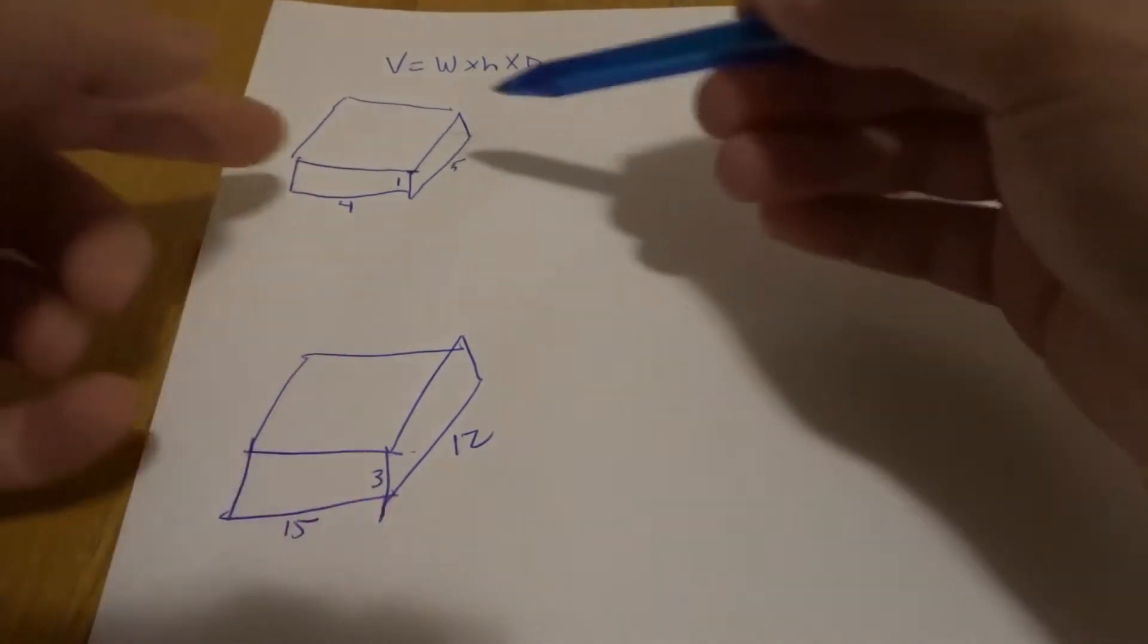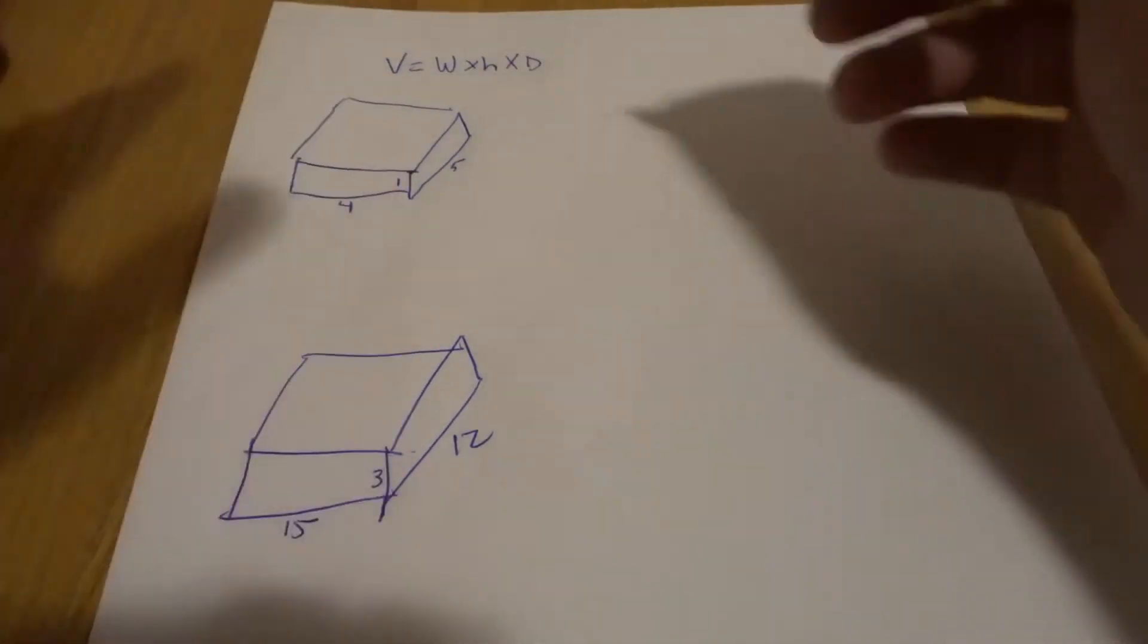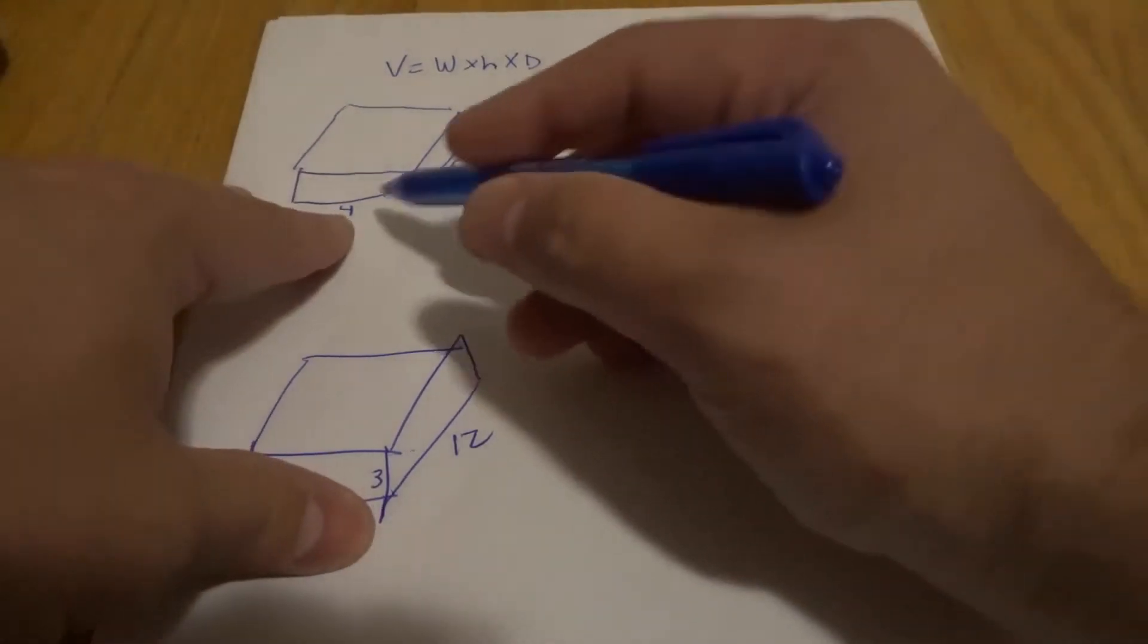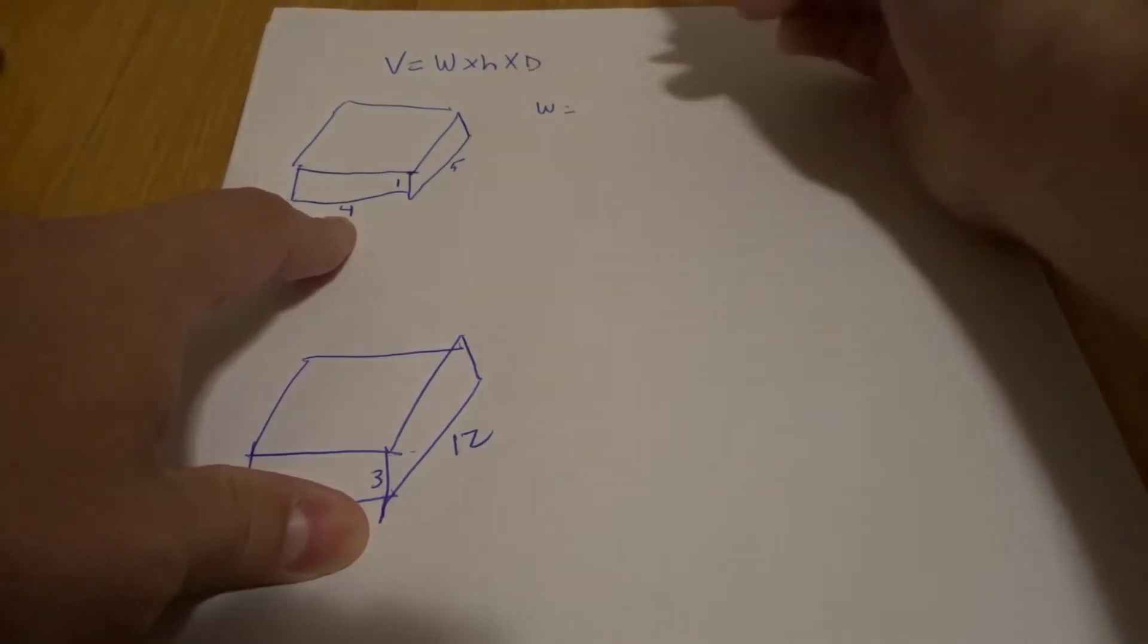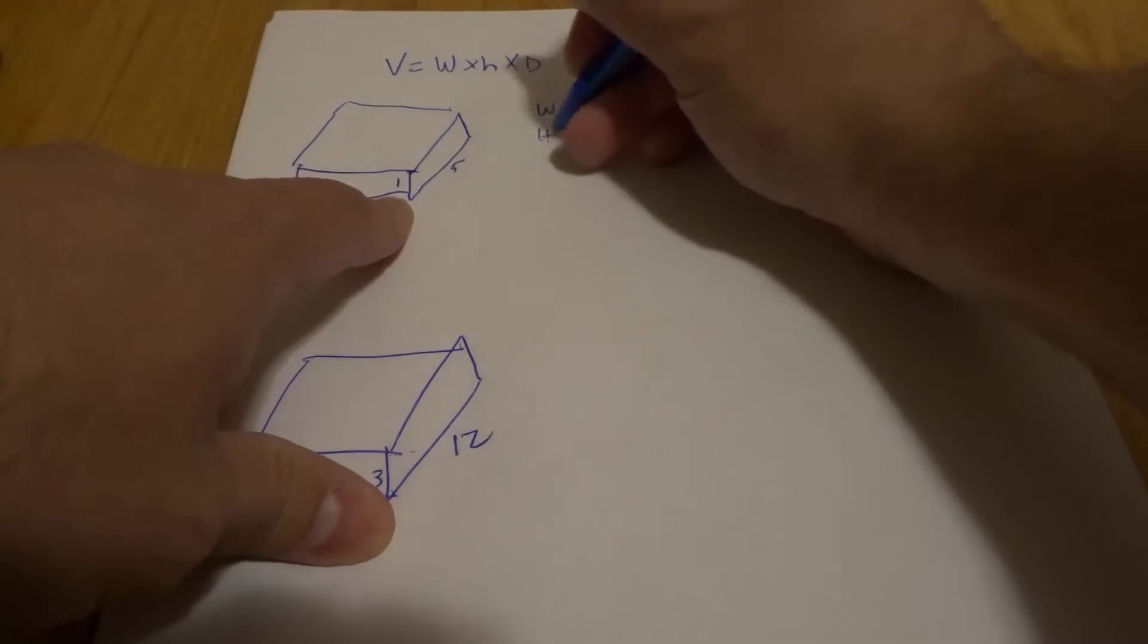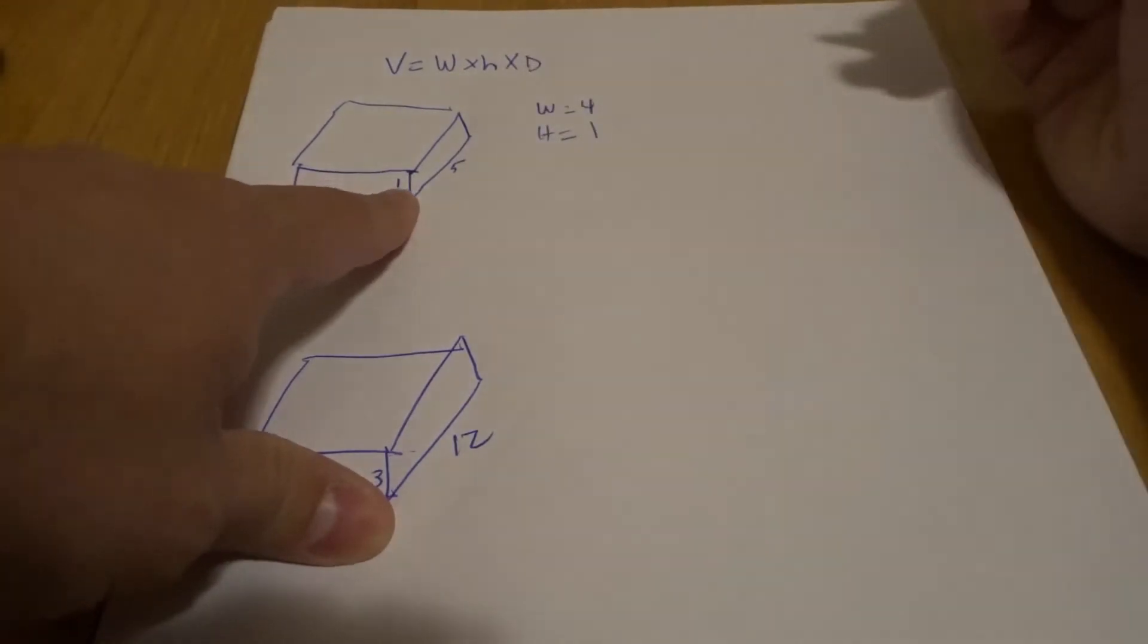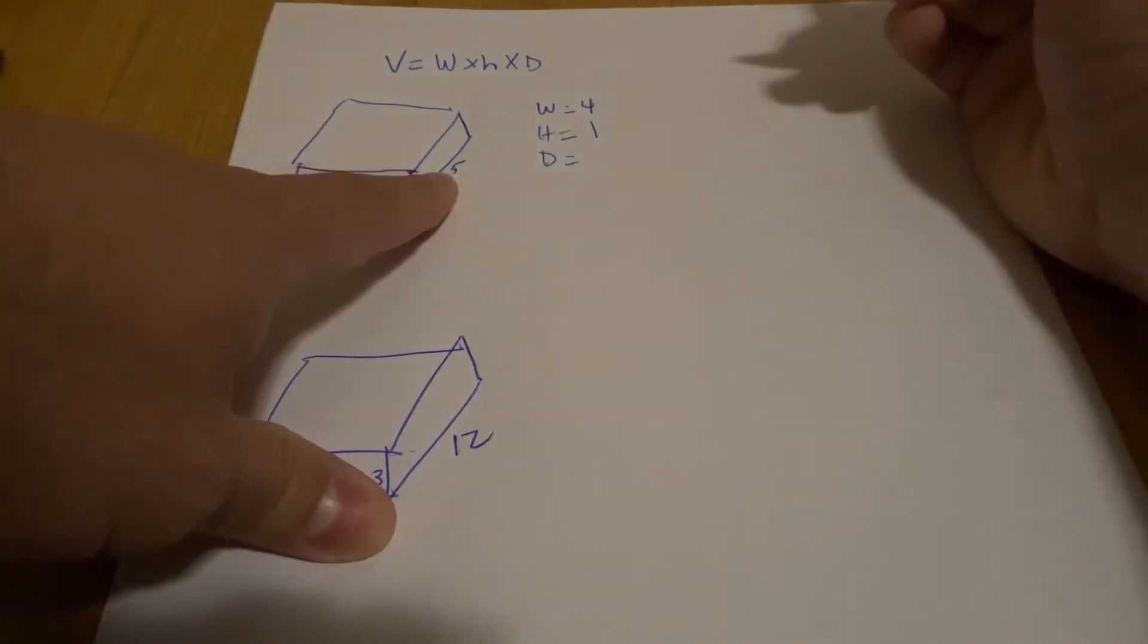Now the first example is when you have the dimensions that are already in feet. So I'm going to write down what each of the dimensions are. As you can see, my width is going to be four feet. My writing is pretty messy, I do apologize. My height is going to be one foot, as you can see right there, and my depth is going to be five feet.